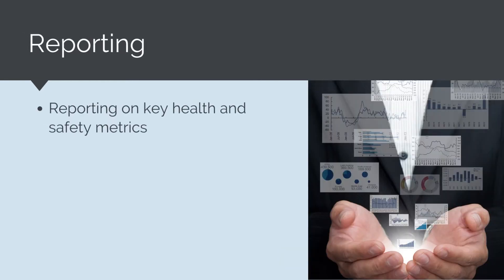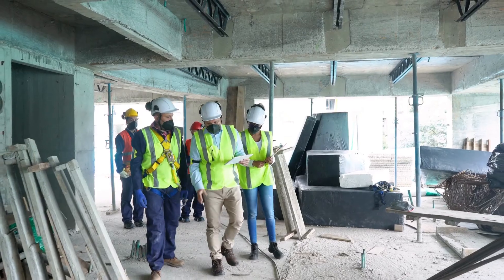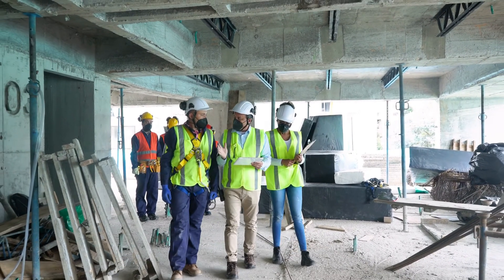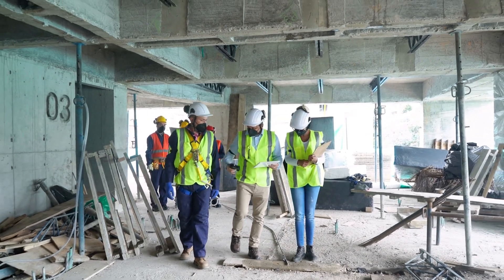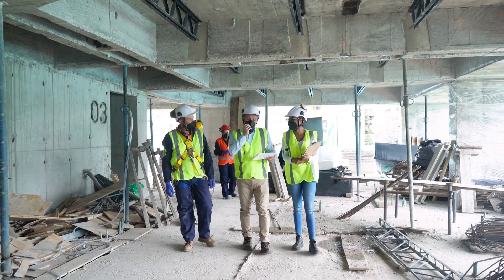Finally, reporting on key health and safety metrics is another tool used to manage risk. This helps drive responsibility and accountability, and provides important data to identify leading indicators and developing trends. The types of statistics recorded include the number and type of reportable injuries, the number of LTIs or lost time injuries, and the TRIFR rate, which is the total reportable injury frequency rate. These metrics help paint a picture of how a project and company is performing in regards to safety. As a project engineer, safety is a critically important part of our job and our ethical responsibility — we need to ensure works are performed so that everybody is able to go home to their families.